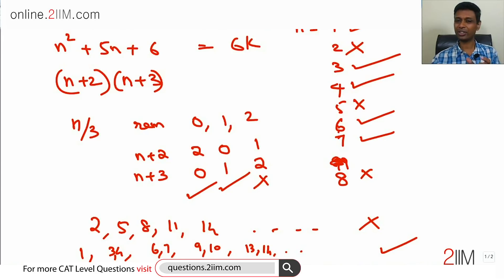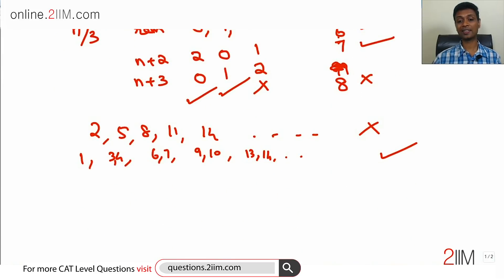Every set of three numbers, one it does not work, two it works. We have 99 consecutive natural numbers, or 33 sets of three. What do I mean by three consecutive numbers? 99 is 33 into 3. So out of the 99 natural numbers, for 33 it will not work.